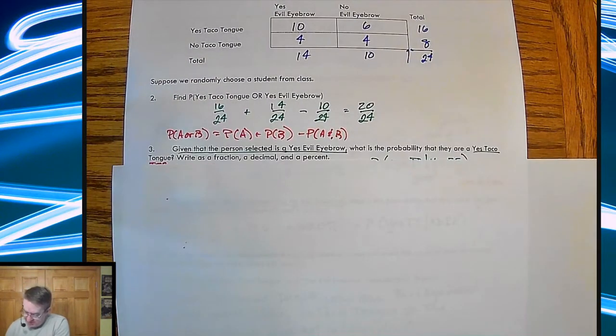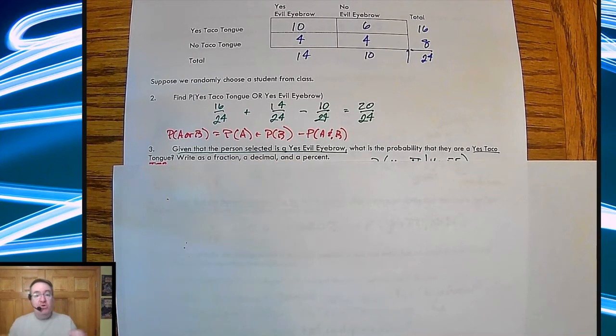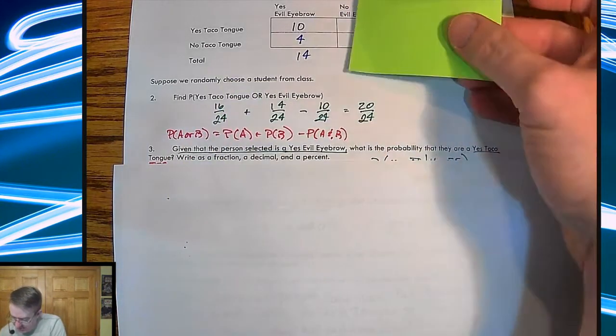So now the next question was this, given that the person selected has evil eyebrow. So we already know that they can do that. And so because of that, it's going to change how we set this up. What's the probability that they are a yes, taco tongue, as a fraction? So you are saying right now, because since we know the person's evil eyebrow, you're basically in this category right here.